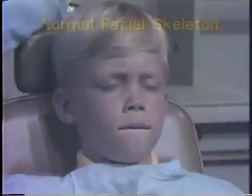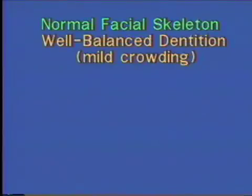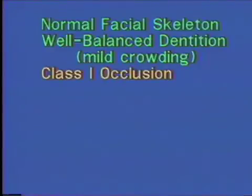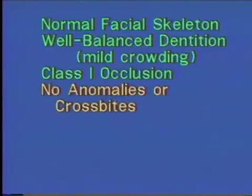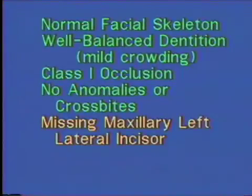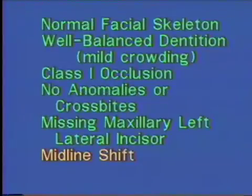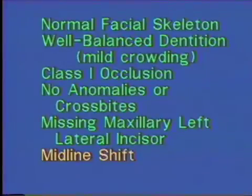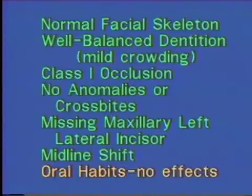In summary: skeletally, Jeff has a normal, well-balanced facial skeleton. Dentally, he has mild crowding, Class 1 occlusion, no anomalies or cross bites, but a missing upper left lateral incisor with a significant midline shift toward the left, determined to be a maxillary problem. Functionally, there are no severe prematurities or cross bites, no open bites, and no effects of oral habits.